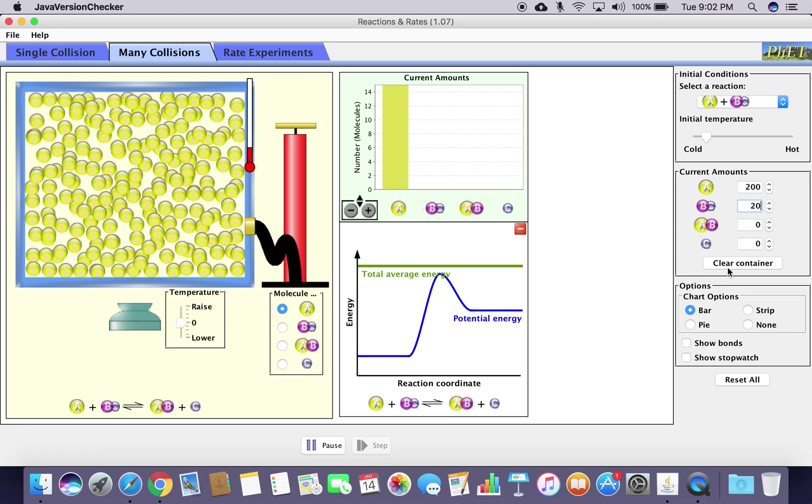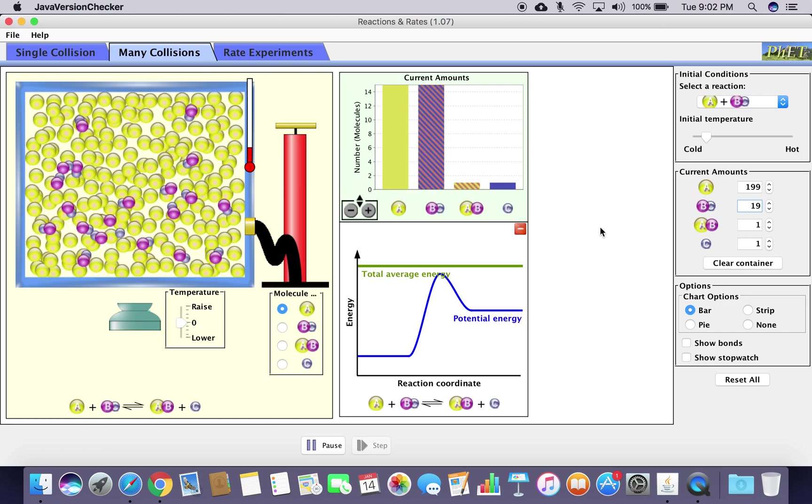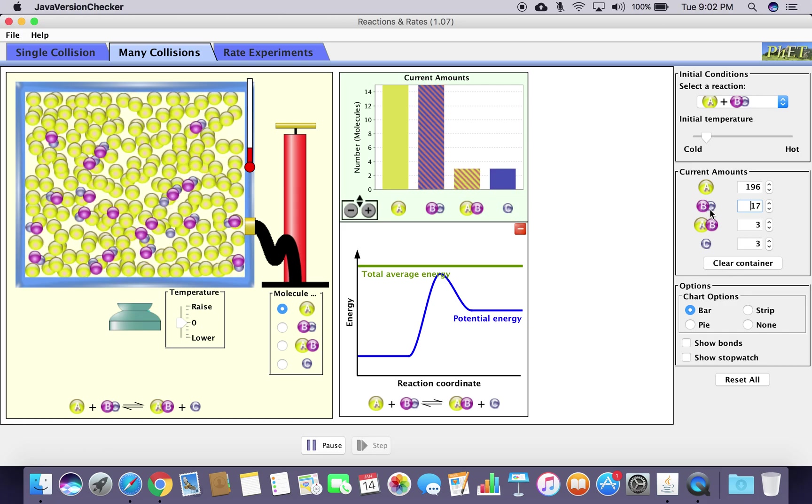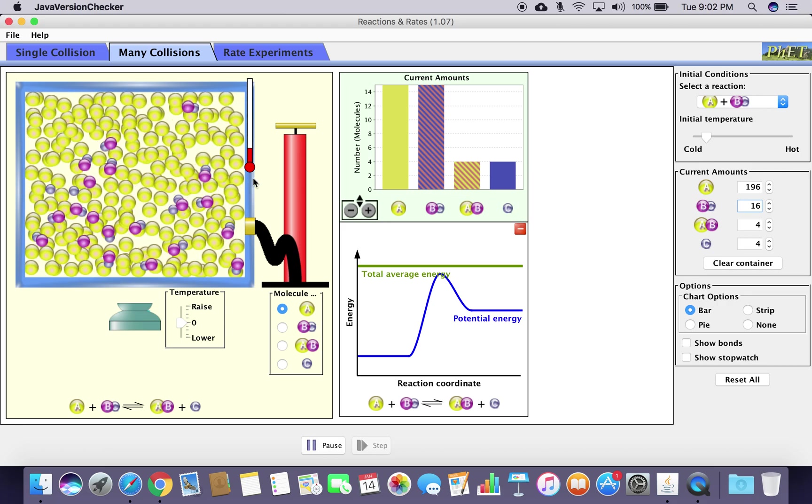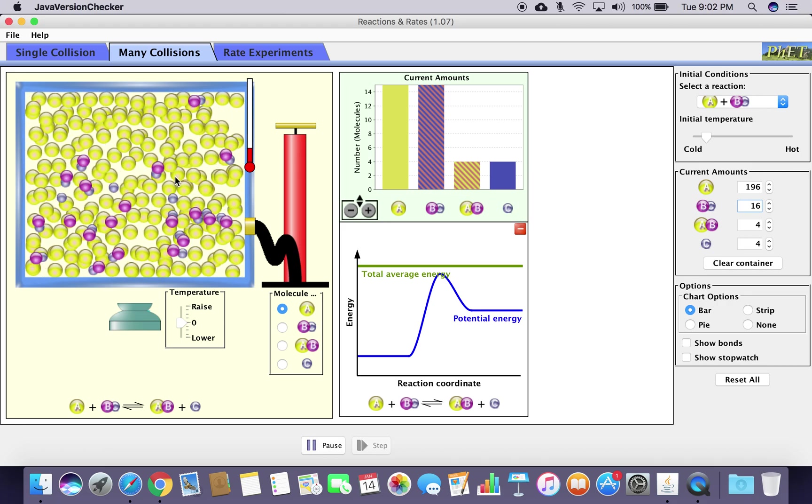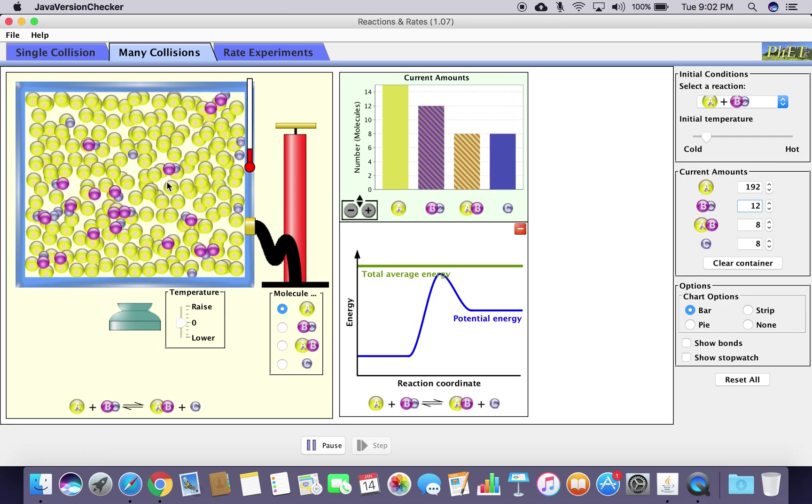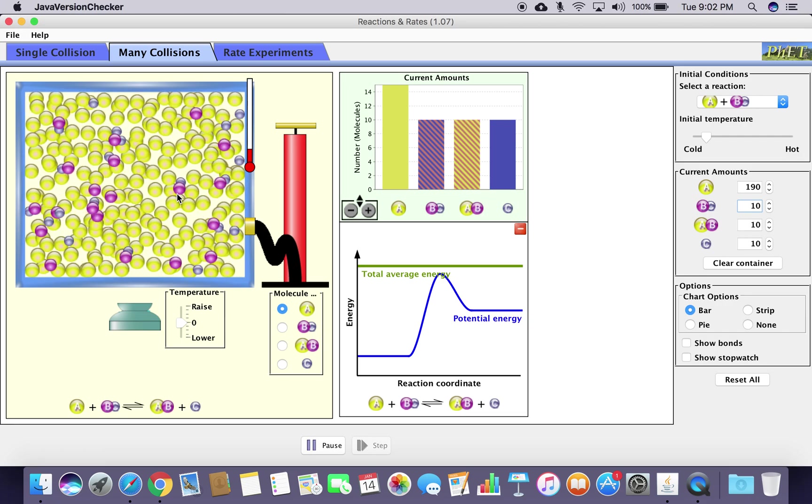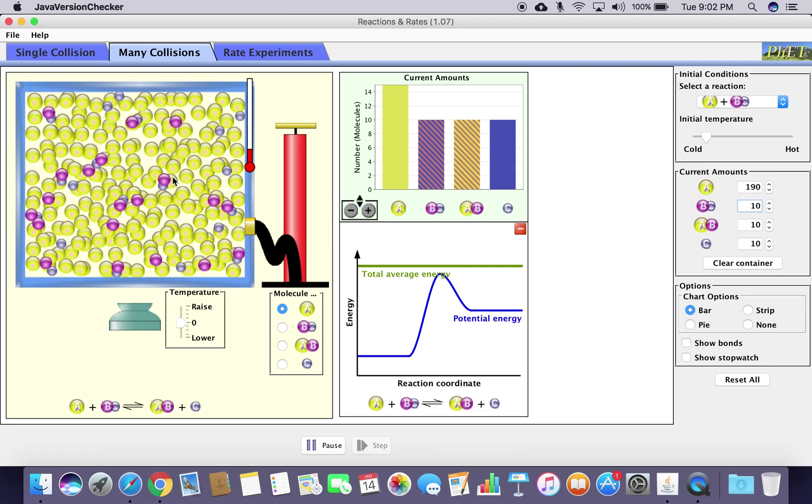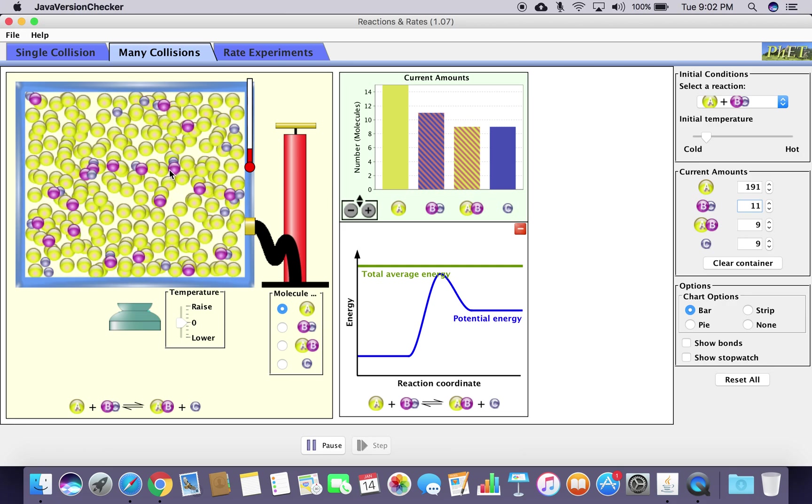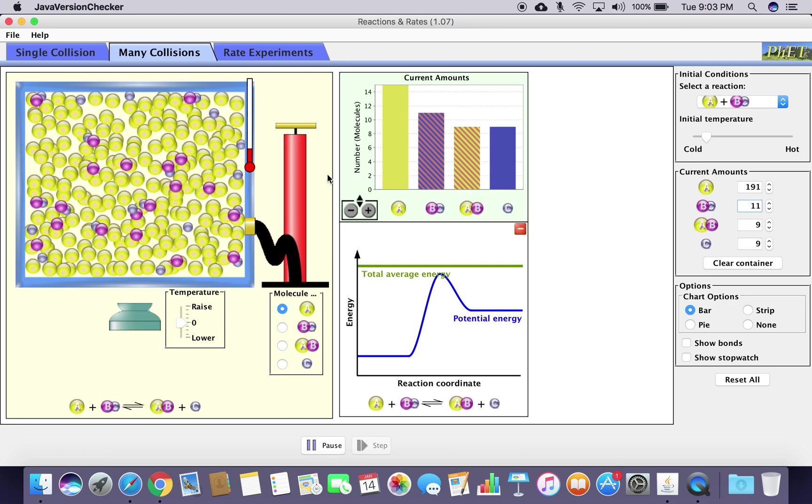When you hit enter it'll start to change the amount of BC. What's happening is a lot of those yellow A atoms are colliding with each other, but the B and C are colliding with a lot of A. If I track this one right here, it's not colliding with anything but A, so you get a lot of reaction.